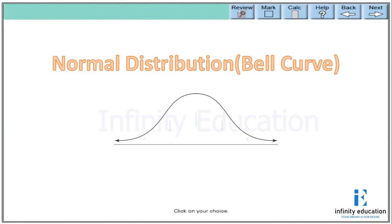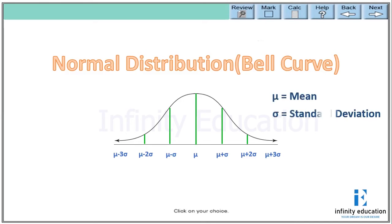This is how a bell curve looks, where it is split into almost six parts. The middlemost point is mu, and on the right side: mu plus sigma, mu plus two sigma, mu plus three sigma. On the left side: mu minus sigma, mu minus two sigma, and mu minus three sigma, where mu is the mean and sigma is the standard deviation. The two middlemost parts consist of 34% and 34% respectively of all the data, the next two parts are 14% and 14%, and the extreme two parts consist of 2% and 2%.